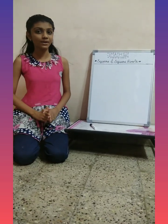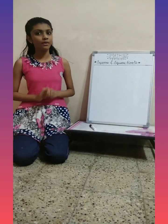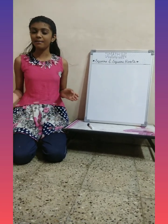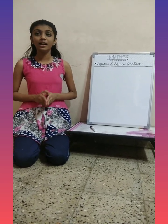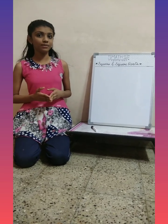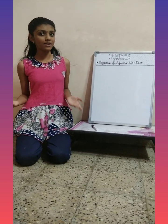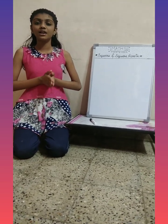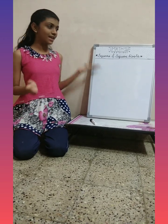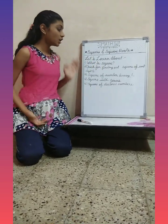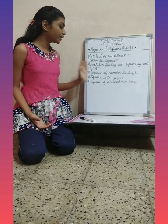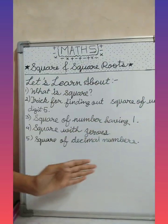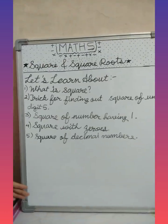Hello friends, welcome back to my channel. Today we will learn something new. I am adding math subject on my channel, which means we will be able to learn art, science, and maths on one and only channel, Varishna Wizard. So let's learn today's topic: square and square root. We'll cover what is square, trick for finding out square of unit number digit five, square of number having one, square with zeros, and square of decimal number.